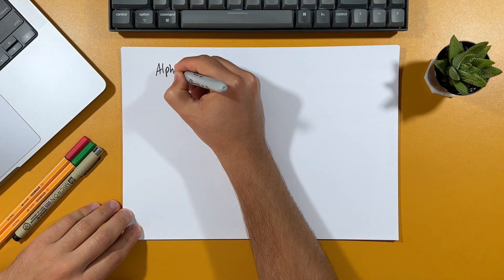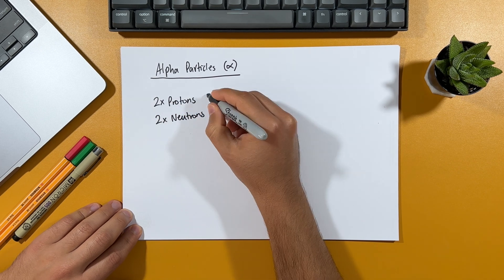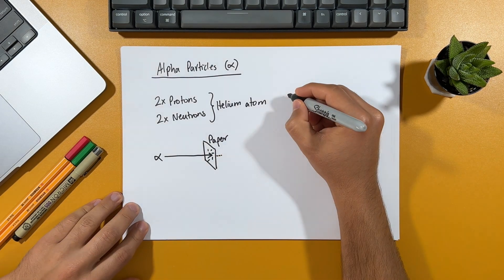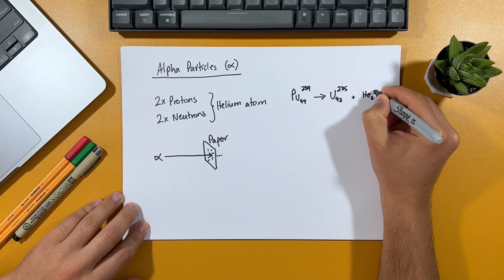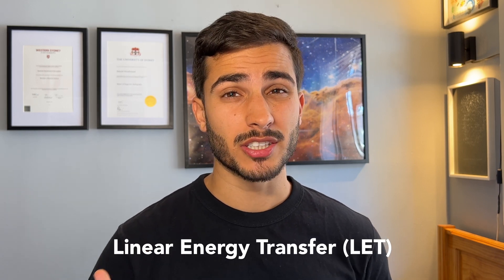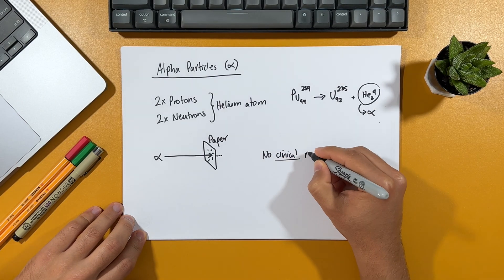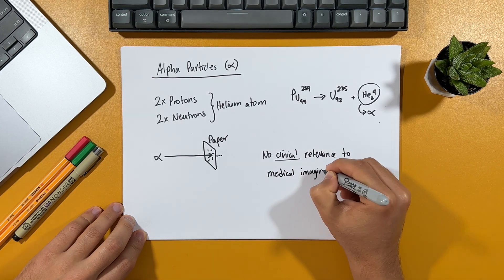And so the three main types of particulate radiation we'll cover are alpha particles, beta particles, and the trusty neutron. First, let's talk about alpha particles. Alpha particles are made up of protons and neutrons, which essentially makes them identical to a helium atom. And they're emitted by the nucleus of heavy elements such as uranium and plutonium. They have a positive charge and are relatively large, meaning they don't penetrate very far into matter and can simply be stopped by a sheet of paper. This means they have a very high linear energy transfer, which refers to the amount of energy that a particle transfers to a material. And so because of this, alpha particles have no clinical relevance to medical imaging. It is important to note that they can be dangerous if they are inhaled or ingested, as it can cause damage to living cells.